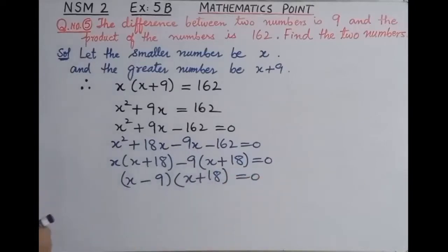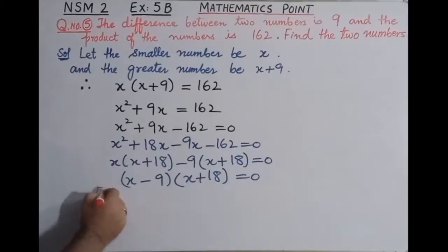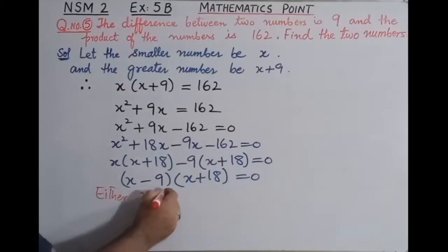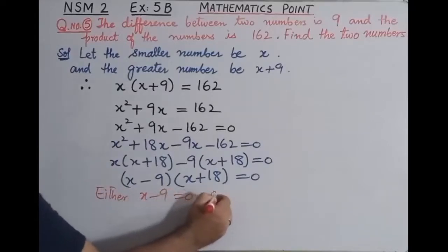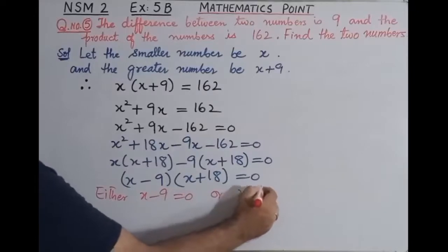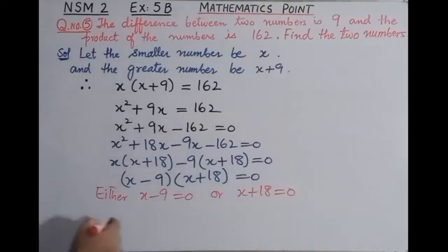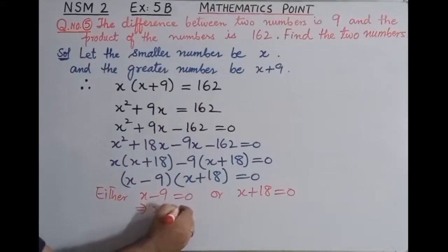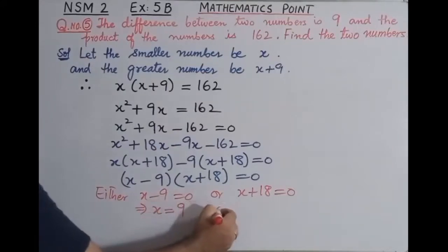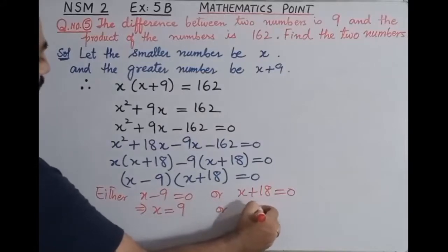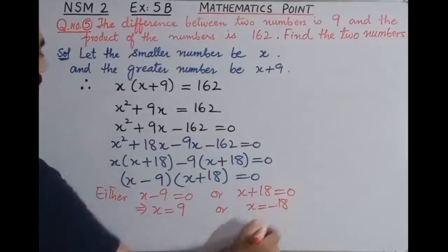अब यहाँ पे either x minus 9 equal to 0, या x plus 18 is equal to 0। इधर x की value क्या आएगी: x is equal to 9। और यहाँ पे x की value क्या आएगी: x is equal to minus 18.